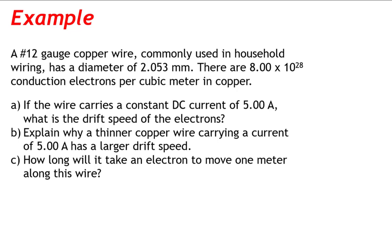A 12-gauge copper wire, commonly used in household wiring, has a diameter of 2.053 millimeters. There are 8.00 x 10 to the 28th conduction electrons per cubic meter in copper. If the wire carries a constant DC current of 5.00 amps, what is the drift speed of the electrons? Explain why a thinner copper wire carrying a current of 5.00 amps has a larger drift speed, and how long will it take an electron to move one meter along this wire?